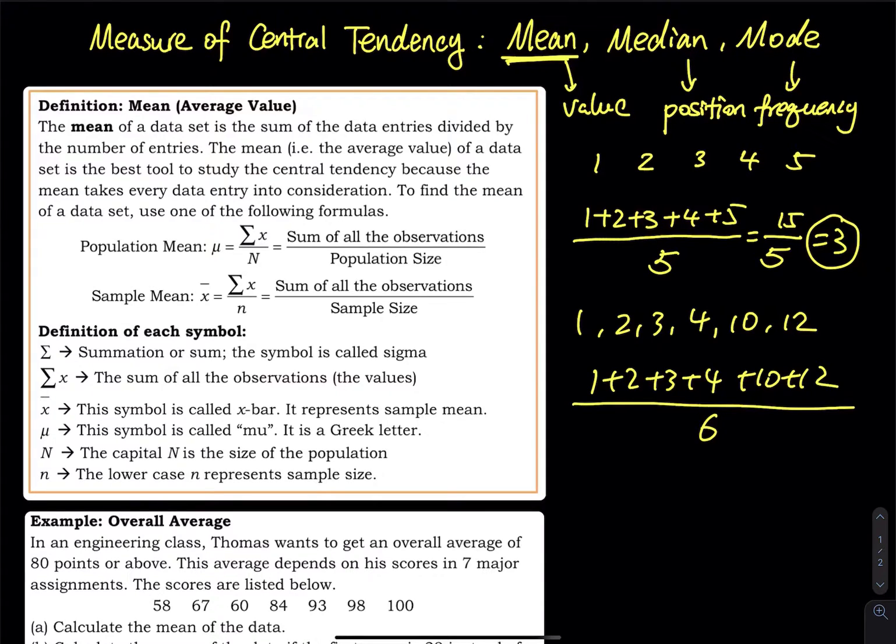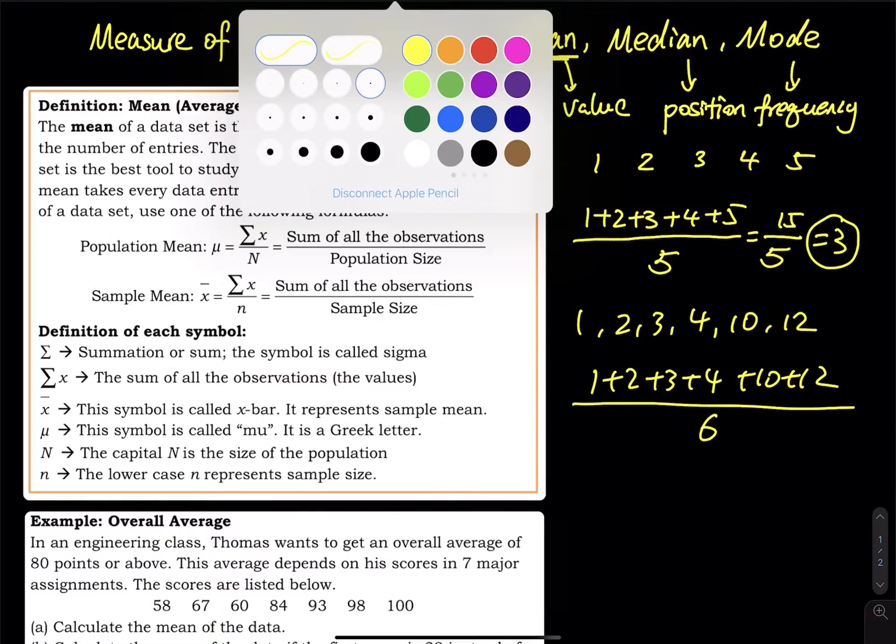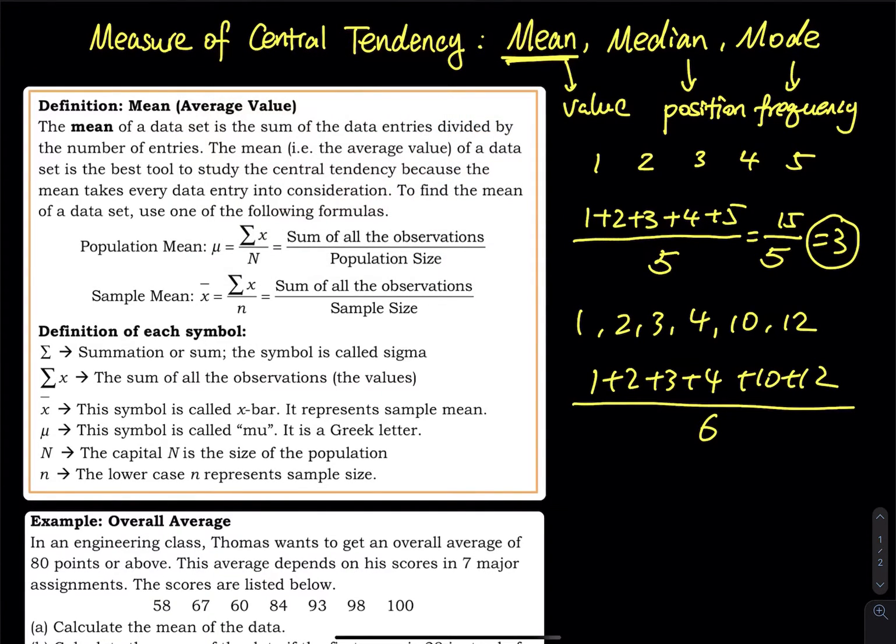The mean of a data set is the sum of the data entries divided by the number of entries. The mean is the best tool to study central tendency because it takes every data entry into consideration.